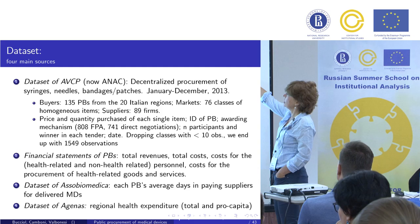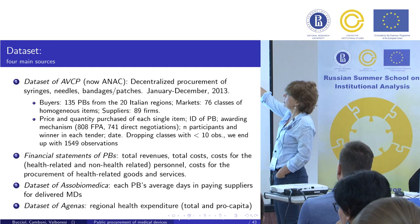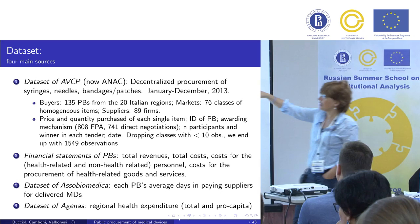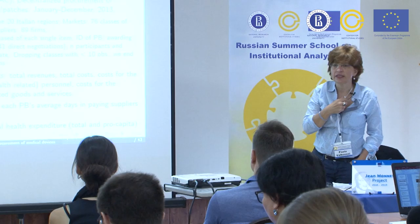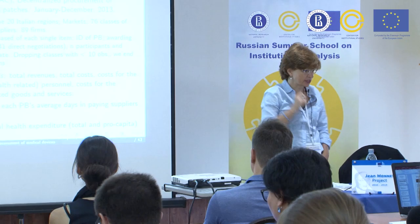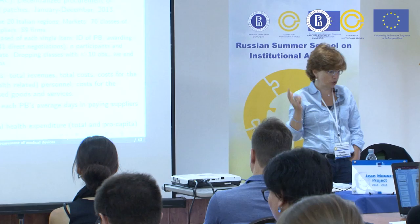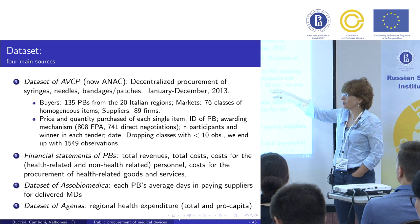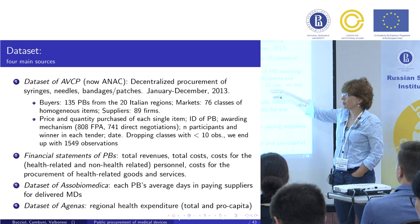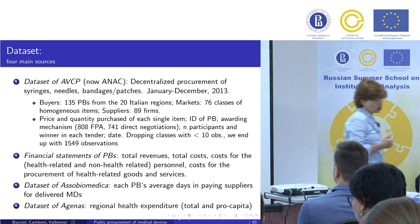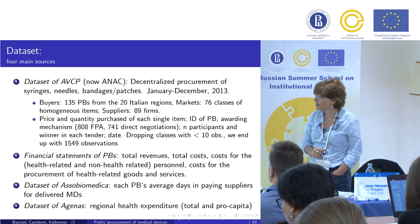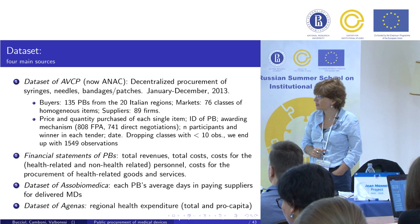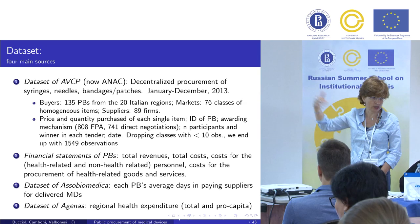We have 135 public buyers in 20 regions, 76 classes of homogeneous items, and about 90 firms entering these procurement procedures. We have information on price and quantity for each item, the identity of the public buyer, the awarding mechanism, and the participants and winner in each tender. For the structural estimation we drop medical devices with fewer than 10 observations, ending up with 1,549 observations.